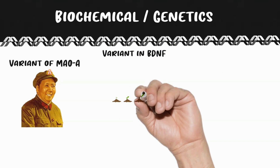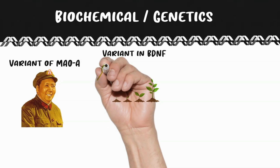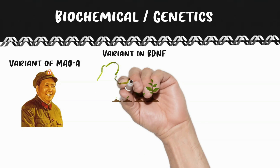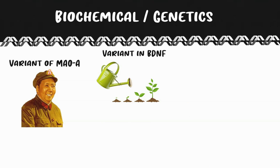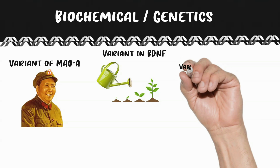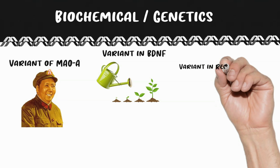Next is a variant in BDNF that causes it to be less active. BDNF is a protein made by neurons and glial cells that promotes the growth and activity of brain cells — almost like the miracle-grow of the brain. Individuals with this genetic variant have less cortical thickness and are believed to do a poorer job of cognitive processing generally, especially in the prefrontal cortex, which is responsible for making moral judgments.